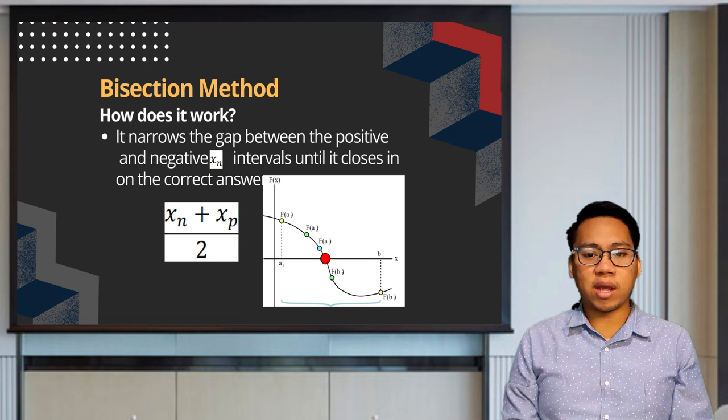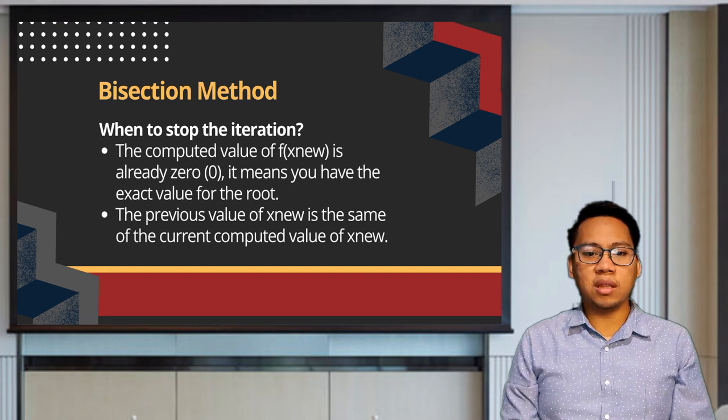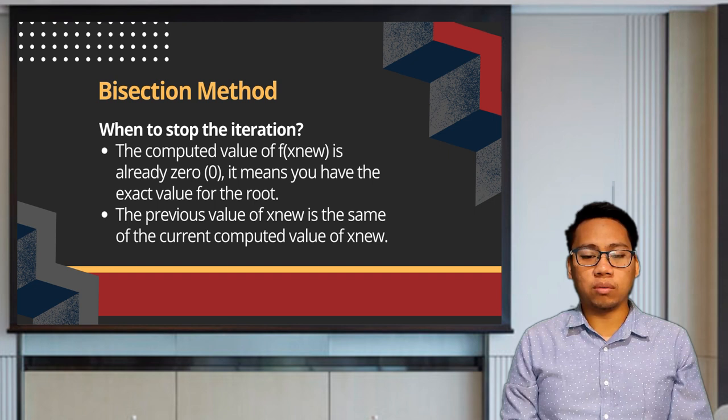Since we mentioned that in this method we will be performing a series of iterations, the following are the conditions that the iteration should be stopped. First, the computed value of your xn is already zero, meaning you have the exact value for the root. Second, the previous value of xn is the same as the current computed value of xn.